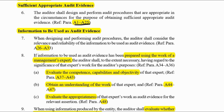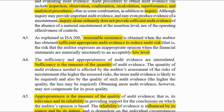It says that we will design audit procedures to give us sufficient appropriate audit evidence, and I've highlighted A1 to A25. If we go to A2, it gives you those procedures — and there you can see: inspection, observation, confirmation, recalculation, re-performance, analytical procedures, and inquiry. Those are the ways we will go and get the evidence we need.